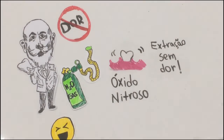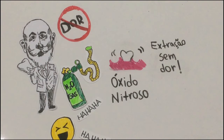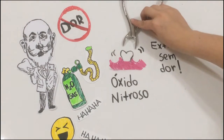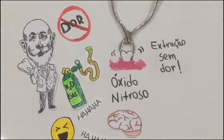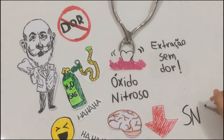Black foi o precursor do uso do óxido nitroso, também conhecido como gás do riso, como sedativo e anestesia. Objetivando a realização de procedimentos como a extração dentária sem que o paciente sentisse dor. O óxido nitroso age causando uma depressão no sistema nervoso central.